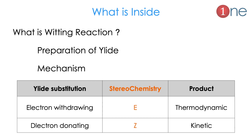What is inside this video? We will see what is the Wittig reaction, and we will see the preparation of the ylide, which is the unique molecule. Then we will see the complete mechanism, and we have a question: when the E-alkene will be formed and when the Z-alkene will be formed. We will see one by one.